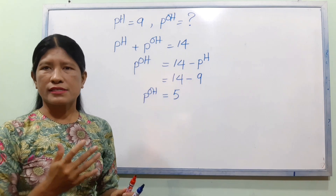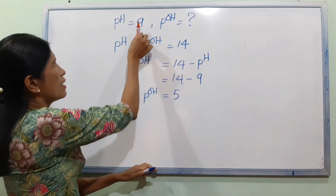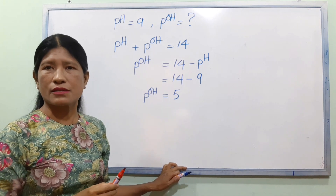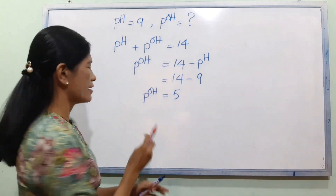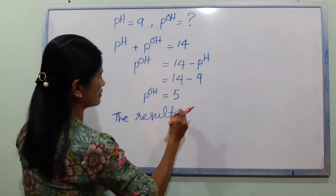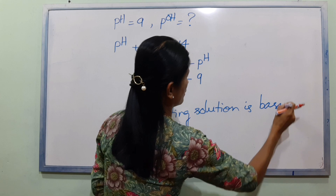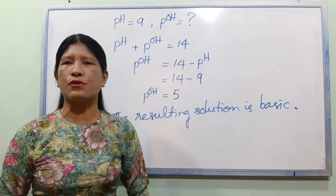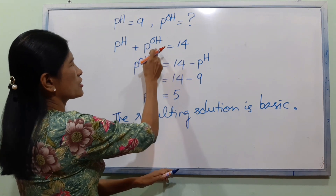The resulting solution is a basic solution. In this case, the resulting solution is a basic solution. The formula is: pH plus pOH equals 14.